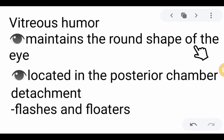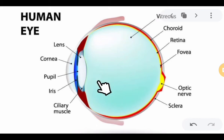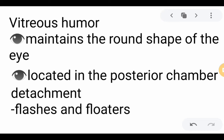Next, we have the vitreous humor, which maintains the round shape of the eye. It is located in the posterior chamber of the eye — the cavity behind the lens — filled with a gel-like fluid. The proper size and shape of the vitreous humor ensures that the back of the eye is attached to the retina. If the size and shape become irregular, there is a detachment of the back of the eye from the retina, and we must perform cryosurgery to reattach it. One symptom of this detachment is when too many flashes and floaters occur.